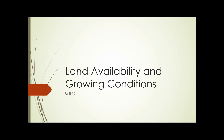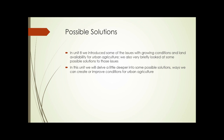Unit 12: Land Availability and Growing Conditions. In Unit 8, we introduced some of the issues with growing conditions and land availability for urban agriculture, and we also very briefly looked at some possible solutions. In this unit, we're going to delve a little deeper into some of the possible solutions — the way we can create or improve conditions for urban agriculture, given the issues of growing conditions and land availability.